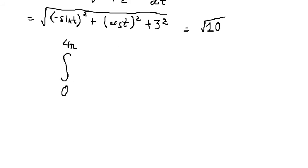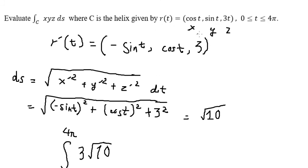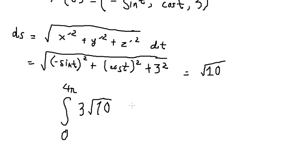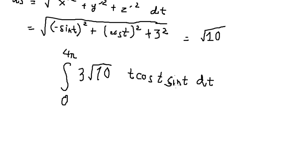So we have 3 multiplied with the square root of number 10. That's from here. And we have cos t, psi t, and we have t. We put 2 over 2.